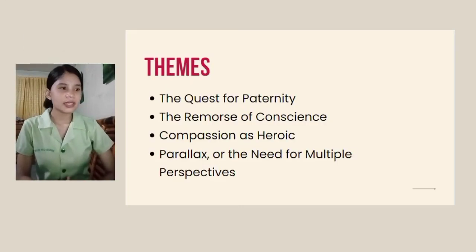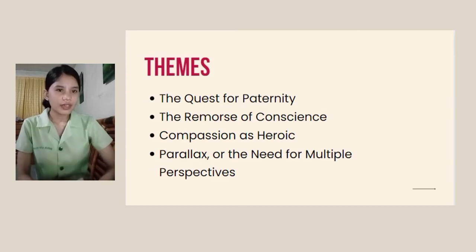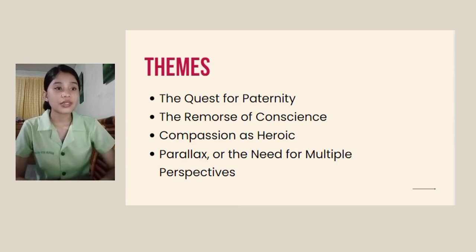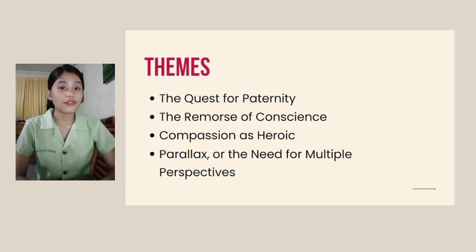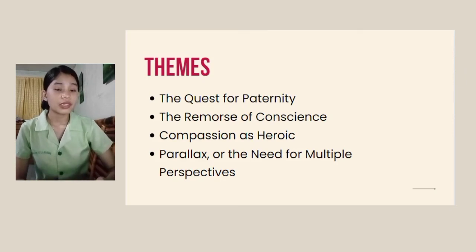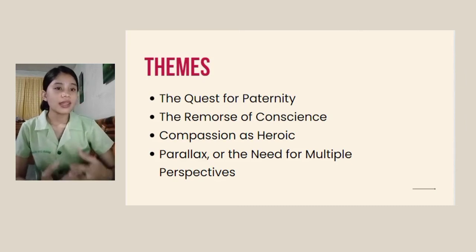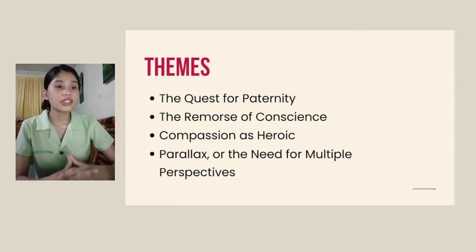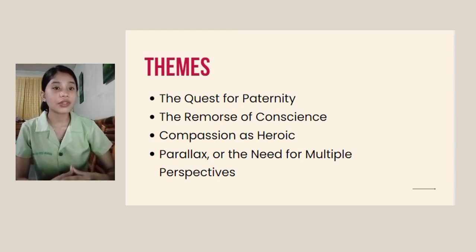We are now down to the themes of the novel Ulysses. The first theme is the quest for paternity. At its most basic level, Ulysses is a book about Stephen's search for a symbolic father and Bloom's search for a son. Bloom's son Rudy died in infancy. In this respect, the plot of Ulysses parallels Telemachus's search for Odysseus and vice versa in the Odyssey. Bloom's search for a son stems, at least in part, from his need to reinforce his identity and heritage through progeny.